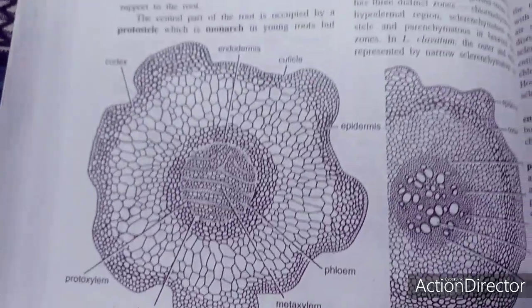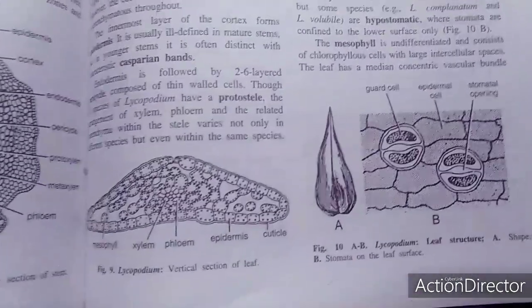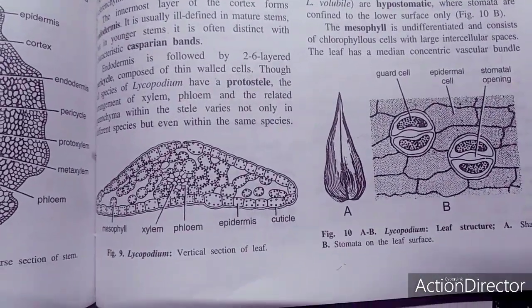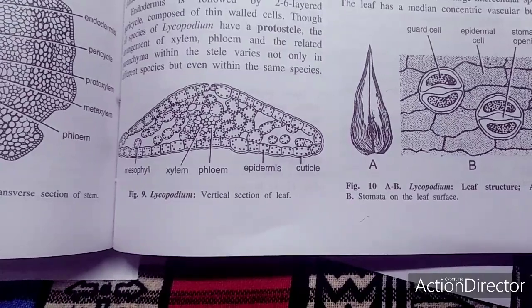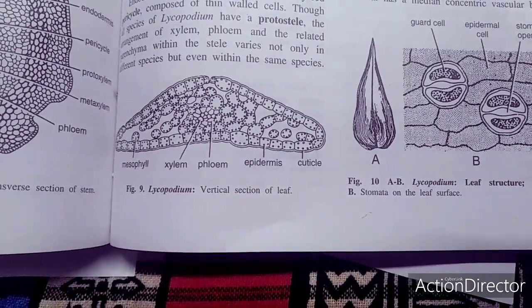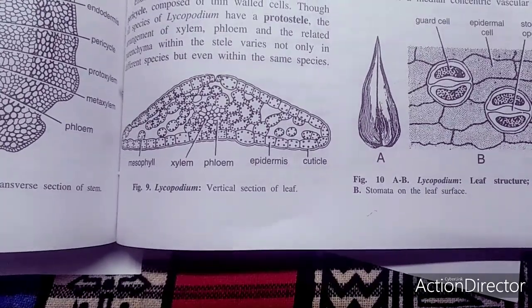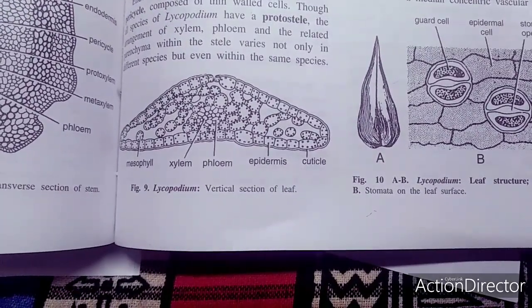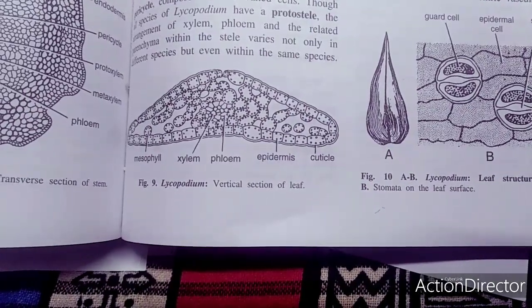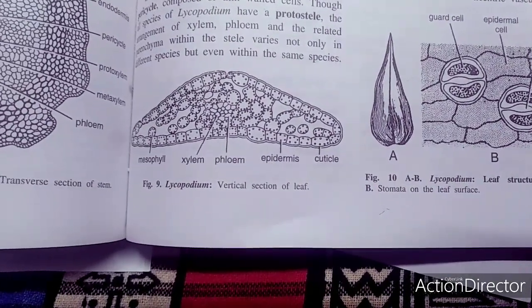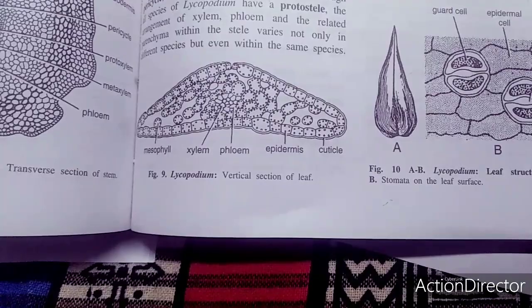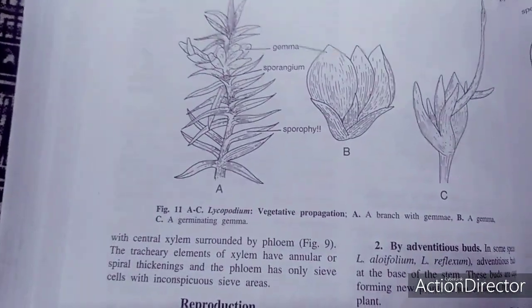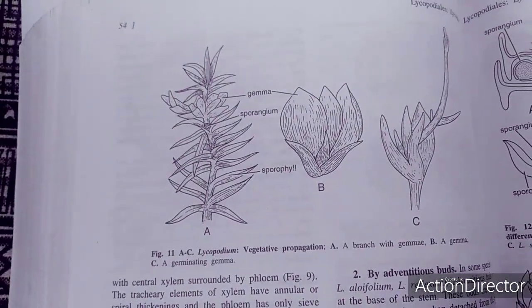Another part is the leaves. Internally, the leaves are somewhat triangular in shape. The epidermis is the outer layer, supported by a cuticle. Most species are amphistomatic, with stomata uniformly distributed on both surfaces. In some species like Lycopodium clavatum and volubile, the hypostomatic condition is present, where stomata are confined only to the lower surface. Mesophyll is present, similar to typical pteridophyte leaves.